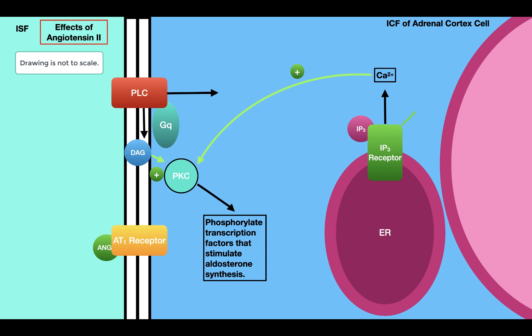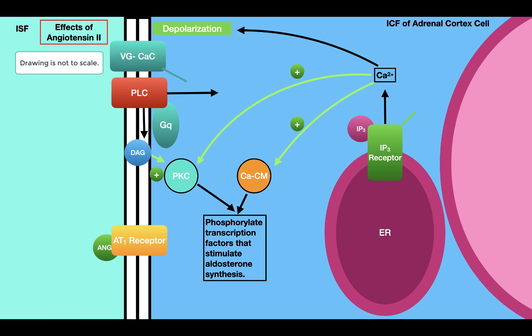Calcium also has additional effects in the adrenal cortex cell. Since calcium has a positive charge, it causes the membrane to depolarize. When the cell depolarizes, this opens voltage-gated calcium channels, allowing more calcium to flow into the cell and further increasing calcium levels in the cytosol, thereby amplifying the effects of calcium.